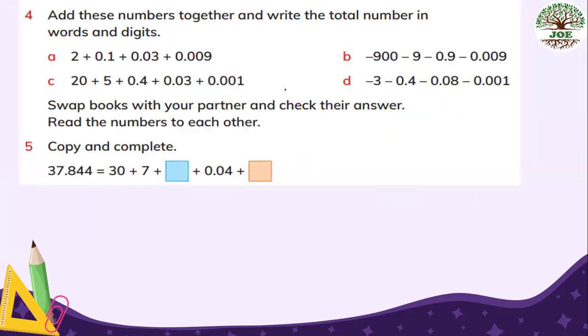Number four. Add these numbers together. Add these numbers together and write the total number in words and in digits. So part A, 2.1.03.009. We add in order. So our number is 2.139. And in words, 2.139.